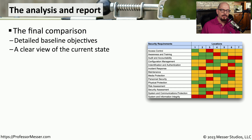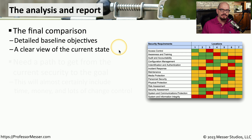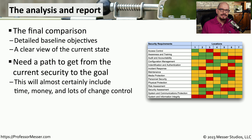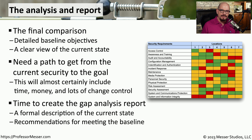Once we've gathered all of this information for all of our processes, all of our devices, across all of our different locations, we need to create a final document that summarizes everything we've discovered. We can start with a comparison that looks at the detailed baseline objectives and gives a perspective of where we are today versus where we would like to be. The path to get from where we are to where we'd like to be commonly takes time, money, equipment purchases, and change control to implement these changes. Once all of this is compiled, we can create a final gap analysis report.